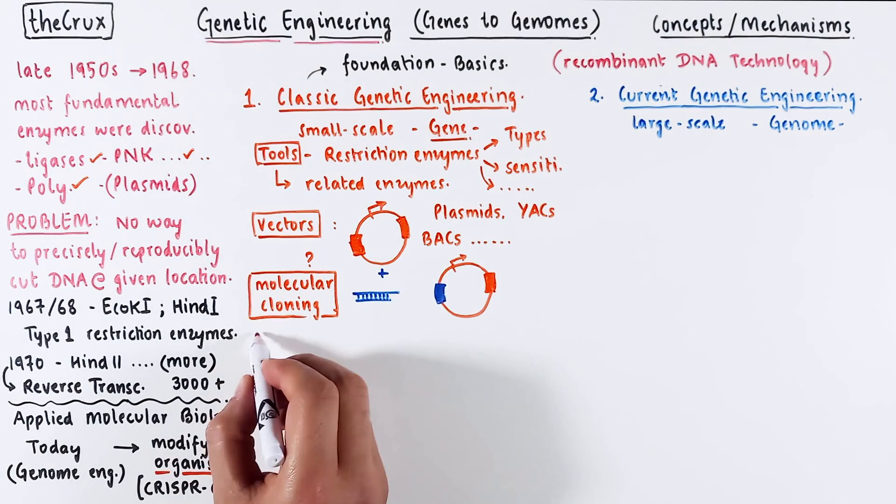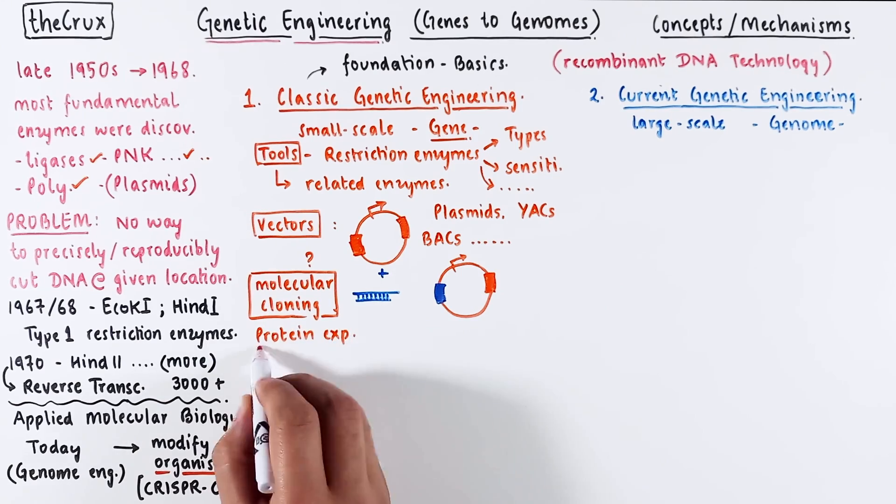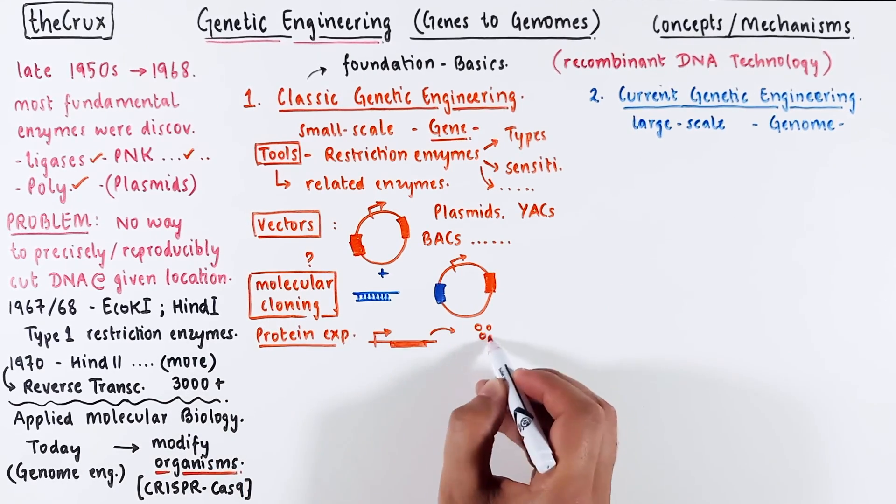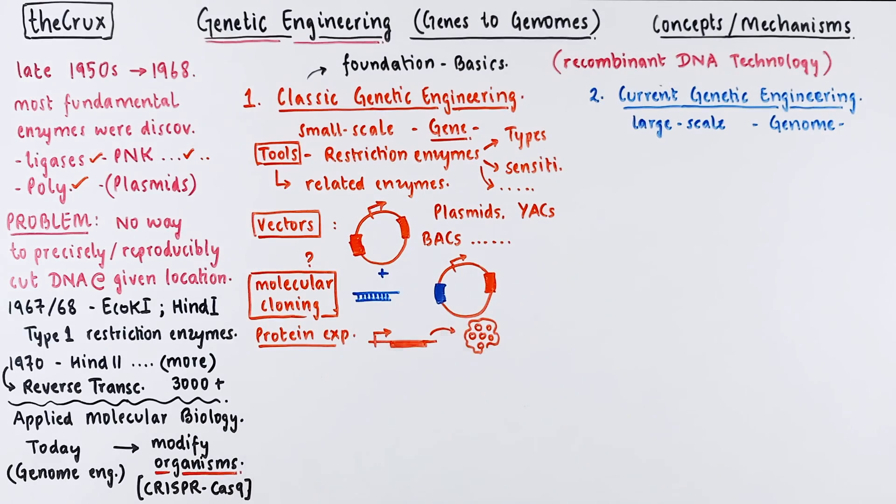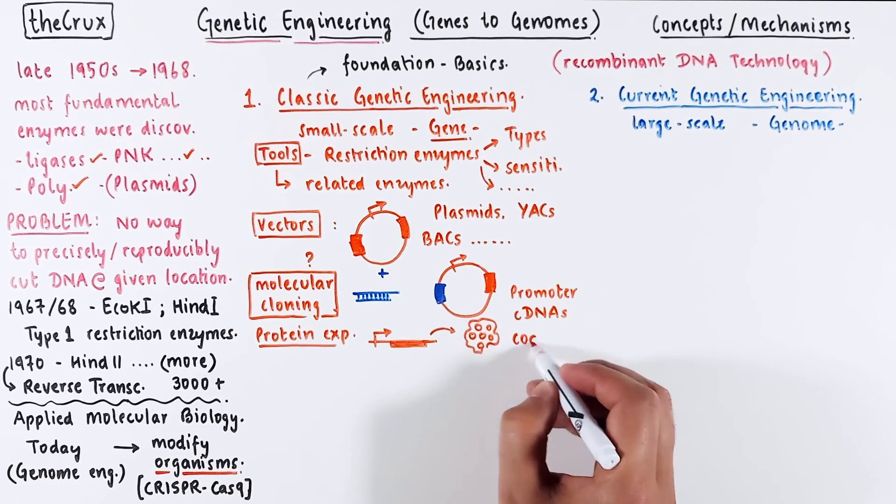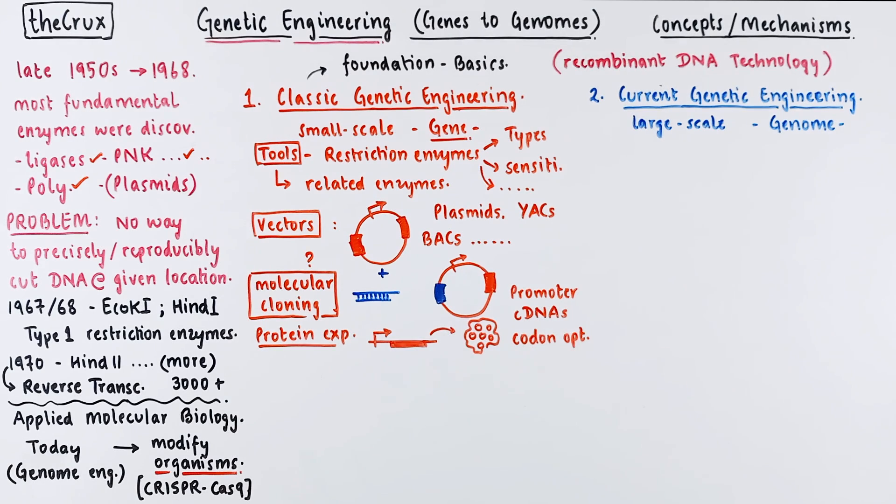Think of methods like golden gate cloning and topo-TA cloning. Once we have cloned DNA, especially a functional gene, our attention then turns to the production of proteins. So we will delve into topics such as promoters, cDNAs, codon optimization, and purification tags.